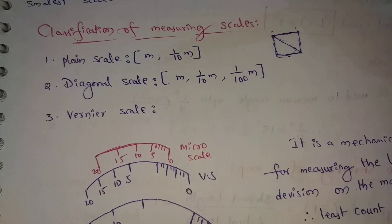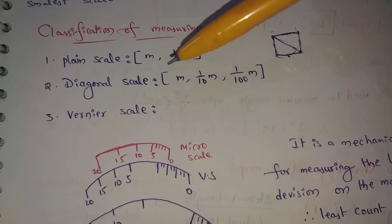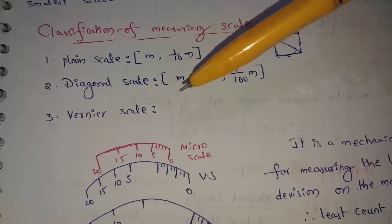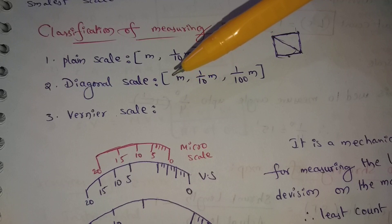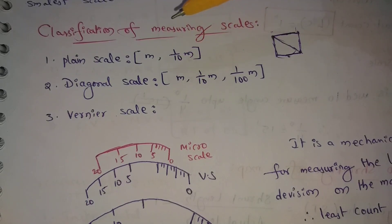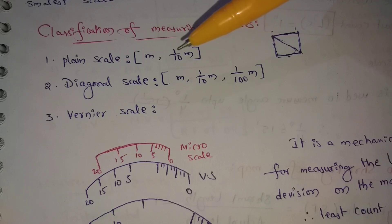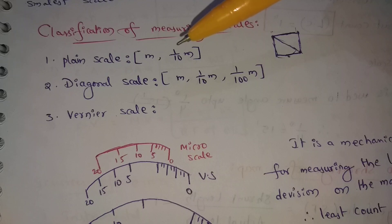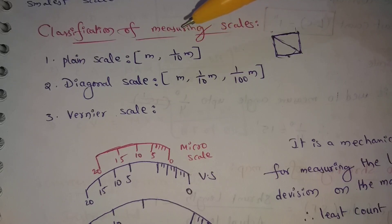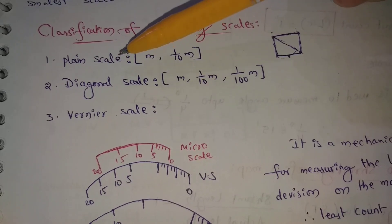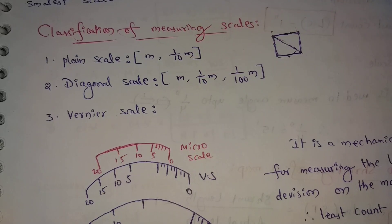In summary, the plain scale is two-dimensional and the diagonal scale is three-dimensional. The Vernier scale is used to find accurate small values. The chord scale is used to set out angles without using a protractor. The three important scales are: plain scale, diagonal scale, and Vernier scale. Please like this video and subscribe to the channel. Thank you for watching.